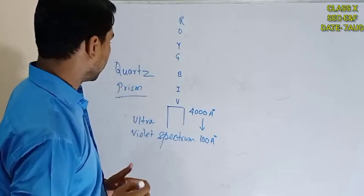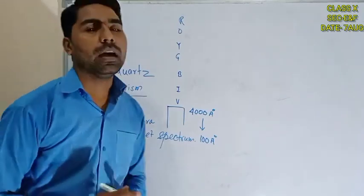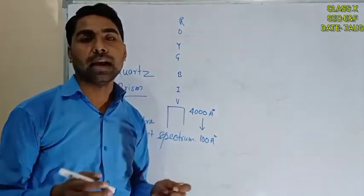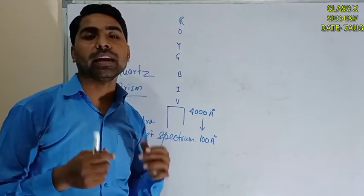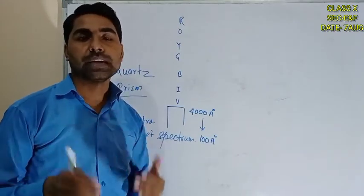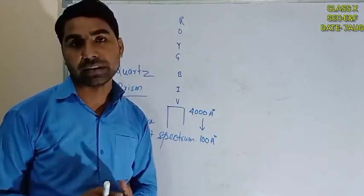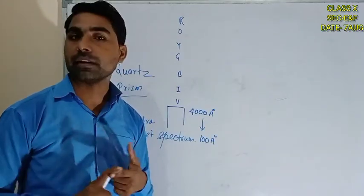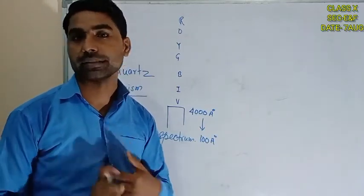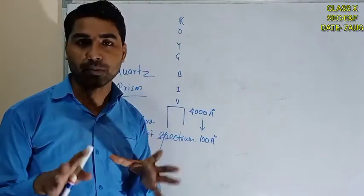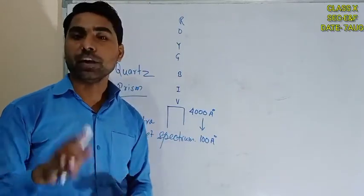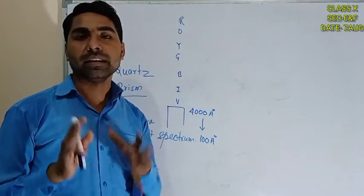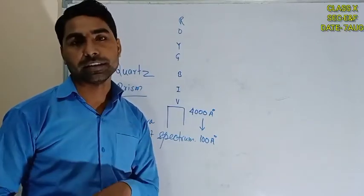Every light source or object with a temperature above 2,500 degrees Celsius produces ultraviolet radiation. The sun produces ultraviolet radiation. However, the human body radiates infrared — it is not radiating ultraviolet. So the sun is a major source of ultraviolet radiation.